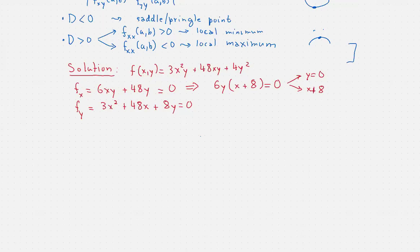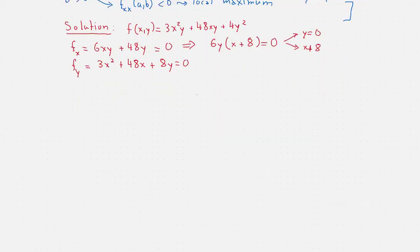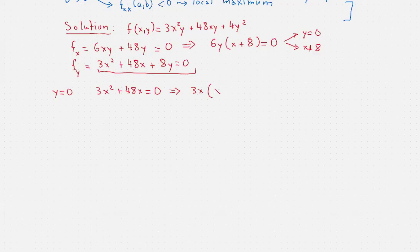Let's start with y equals zero. If y equals zero, then we resort to the second equation where we plug in y equals zero, and we find 3x² plus 48x equals zero. From here, we can factor out 3x, which gives us x plus 16 equals zero. This means that either x is zero, or x equals negative 16.